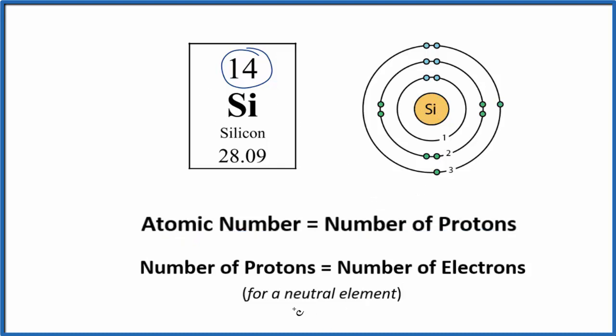Because this is a neutral element, all of the elements on the periodic table are listed as neutral elements, the number of protons is going to equal the number of electrons. So we'll take the electrons for silicon here and distribute them around the nucleus. We have 14 electrons, and we'll put them in these energy levels here.